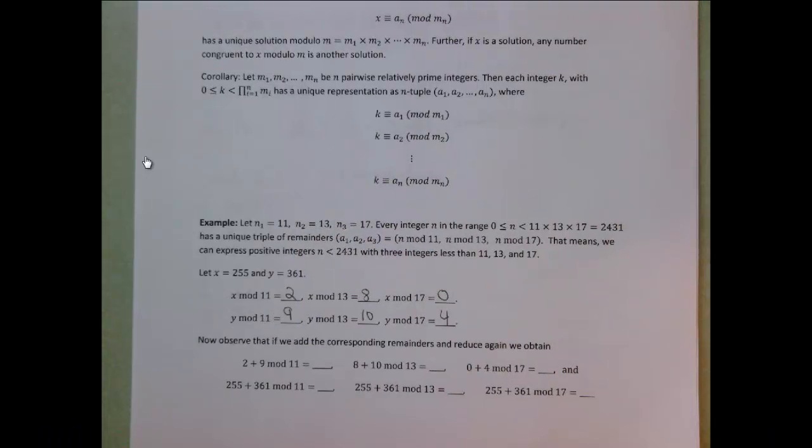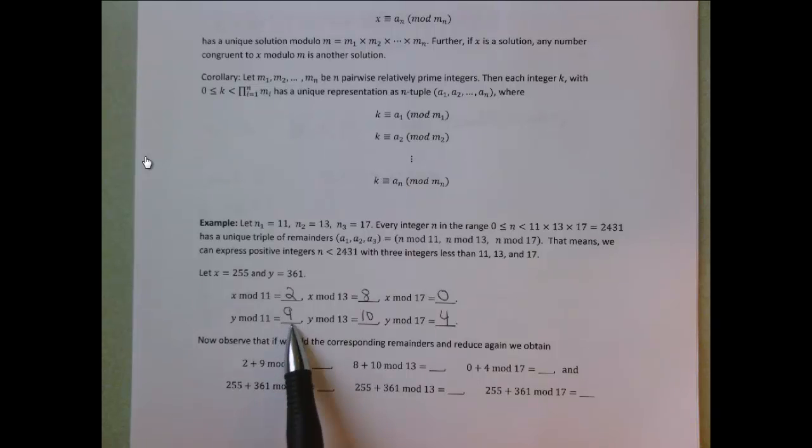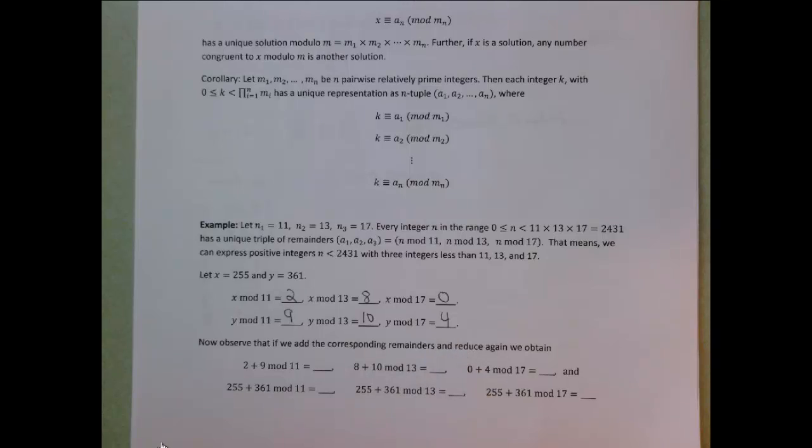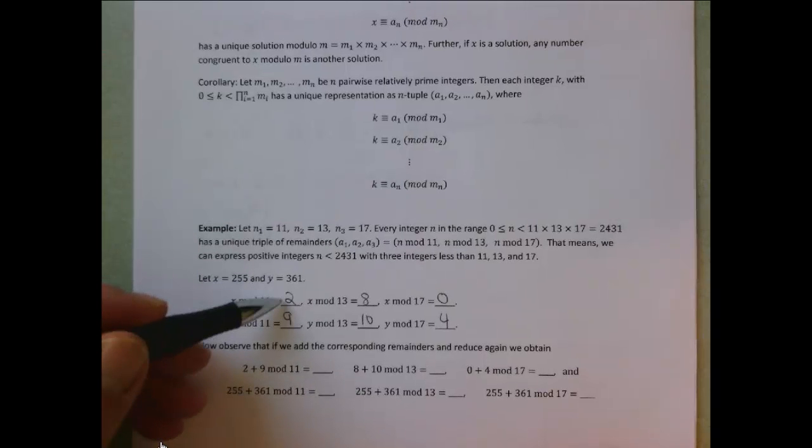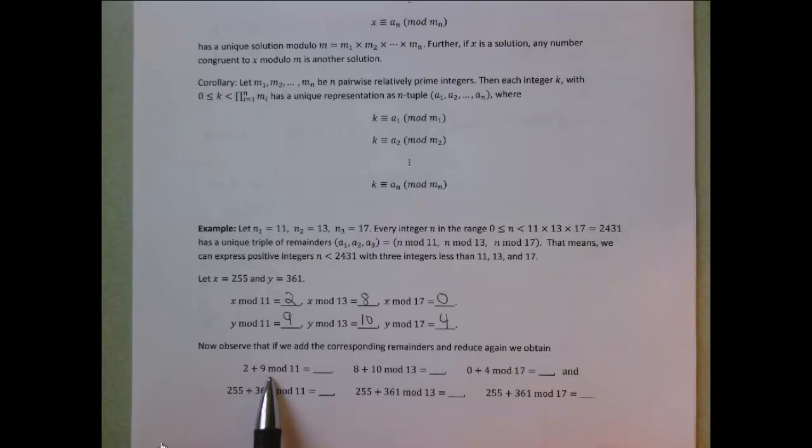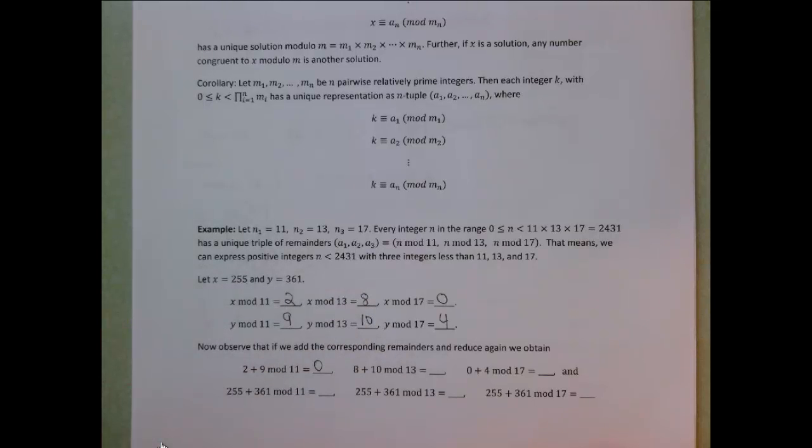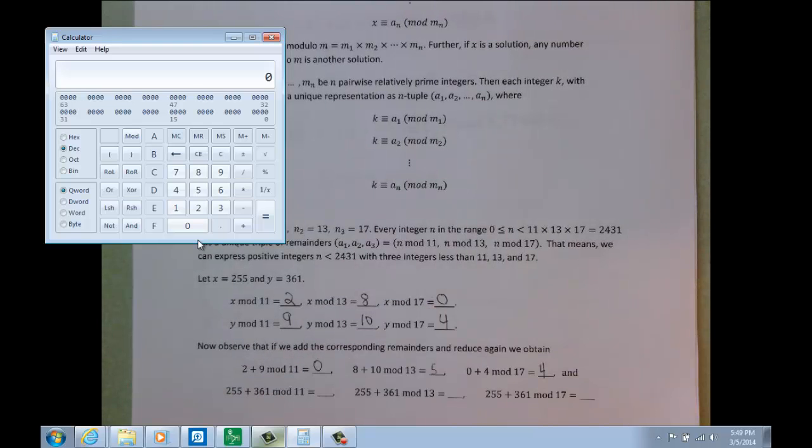When we compute for 361, we find remainders of 9, 10, and 4. Now there's an interesting pattern that develops, one that's easily predictable from our earlier theorems on modular arithmetic. If we take these remainders 9 and 2 and add them, we get 11. 11 modulo 11 is 0. Likewise, 8 plus 10 is 18, modulo 13 is 5. And 0 plus 4 modulo 17 is 4. We'll get all the same answers if we were to take 255 and 361, first add them, and then compute the remainder on division by 11, 13, and 17.